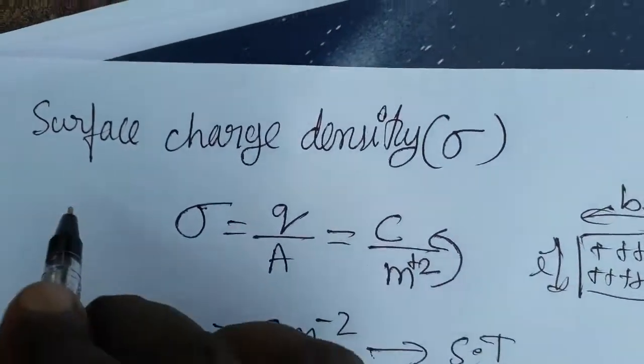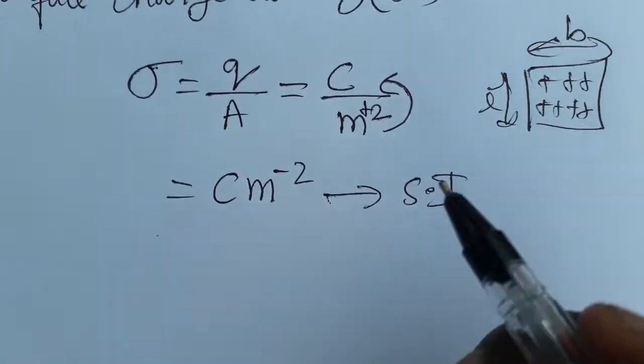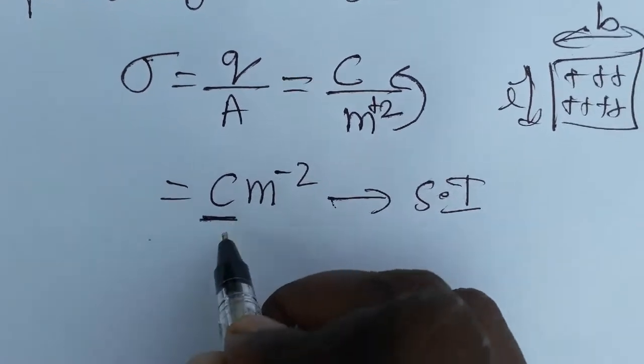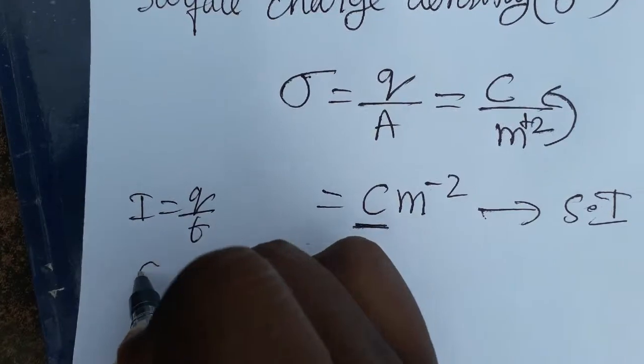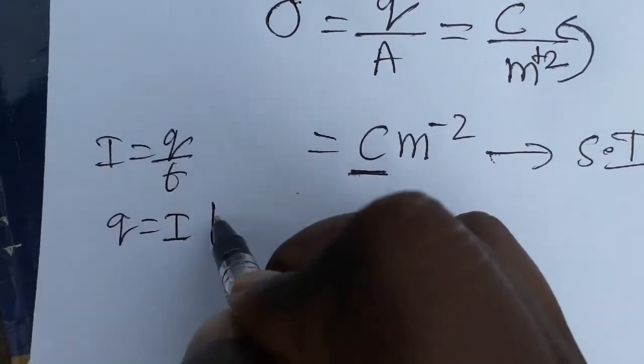What is the dimensional formula? Coulombs, we don't have any dimensional formula. Current is equal to charge by time, so charge is equal to current into time.